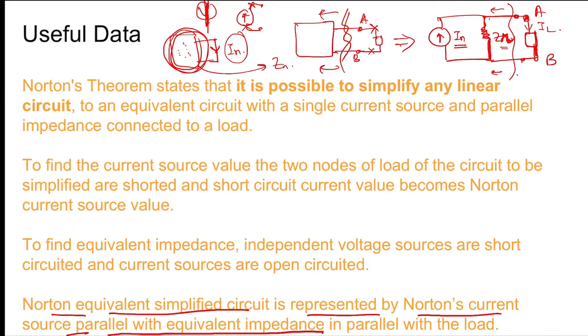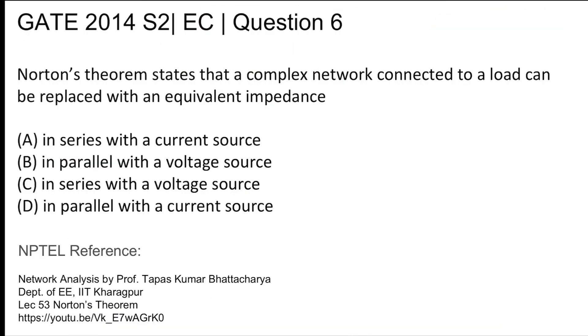The Norton equivalent simplified circuit is represented by a Norton current source in parallel with the equivalent impedance, which is then in parallel with the load. In parallel with the current source is the equivalent impedance, so option D is the correct answer.